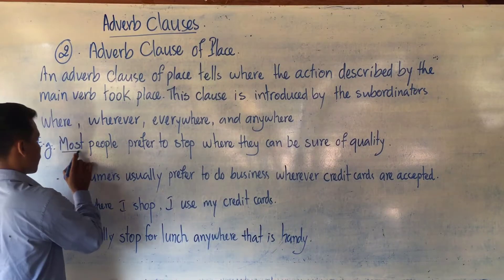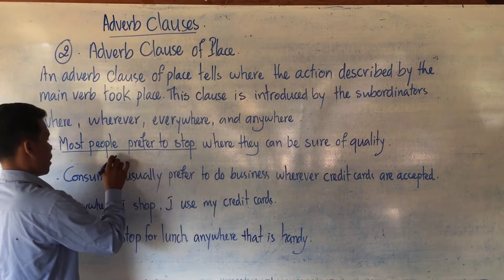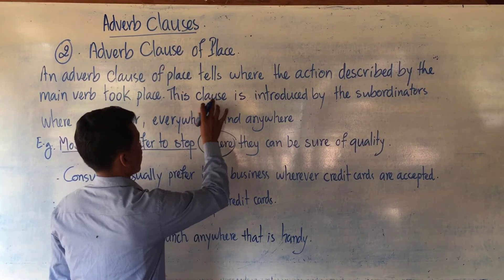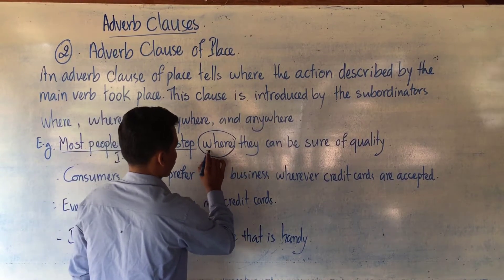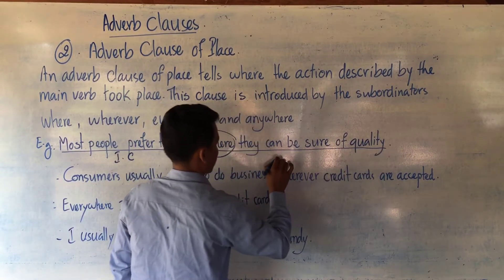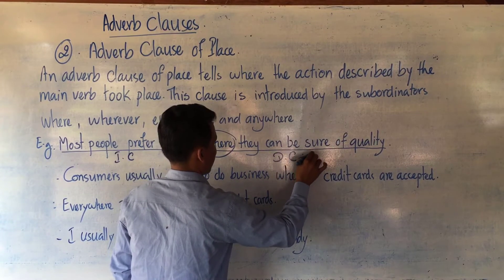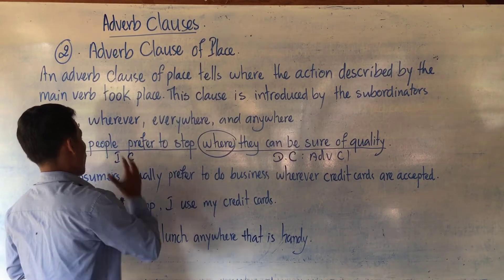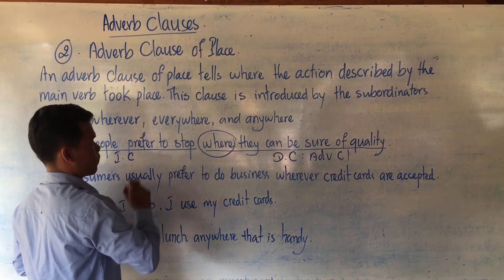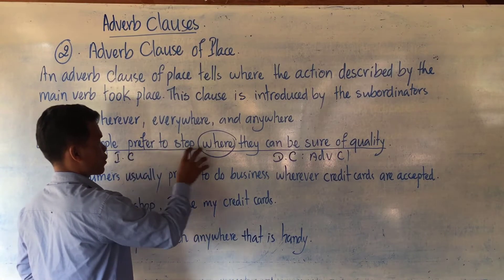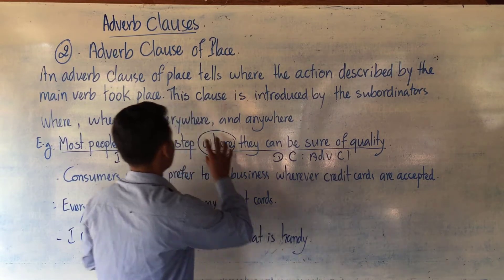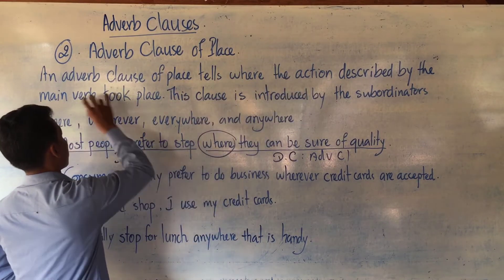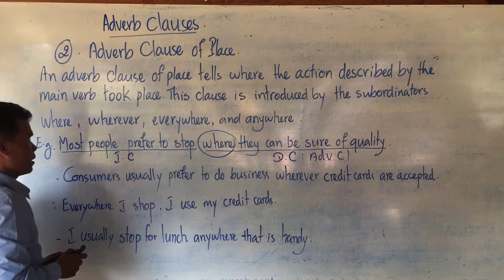From 'where' to the end is the Dependent Clause (DC), and from 'Most people' to 'stop' is the Independent Clause (IC). 'Where' is the subordinator or clause marker. So, from 'where' to 'quality' is the DC — and this DC is an Adverb Clause of Place. Where do most people prefer to stop? Most people prefer to stop where they can be sure of quality. This Adverb Clause tells where the action described by the main verb took place.